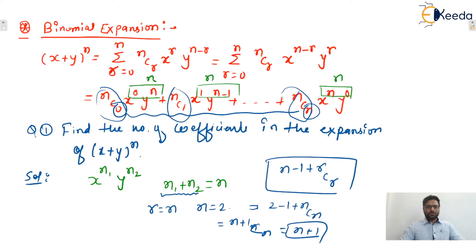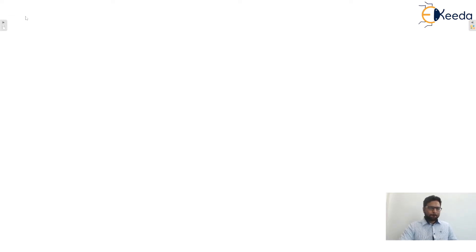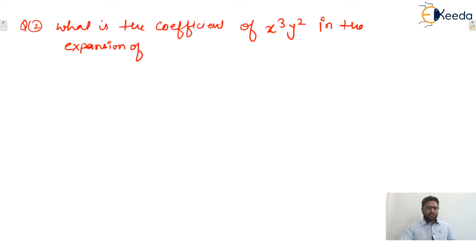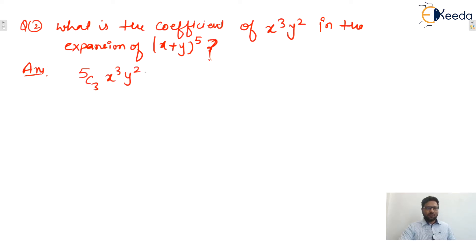Next problem: find the coefficient of x³y² in the expansion of (x + y)^5. The relevant term is 5C3 · x^3 · y^(5−3) = 5C3 · x^3 · y^2, so the coefficient is 5C3 = 10.